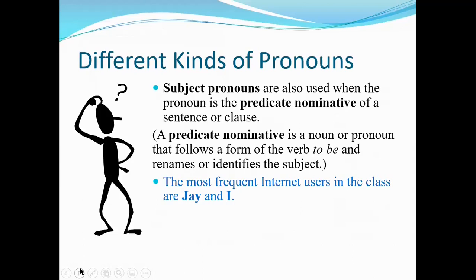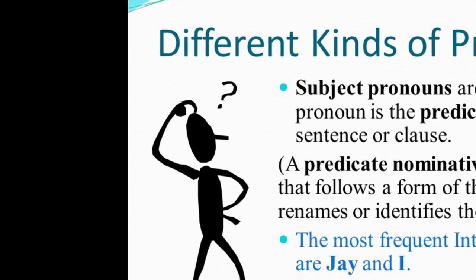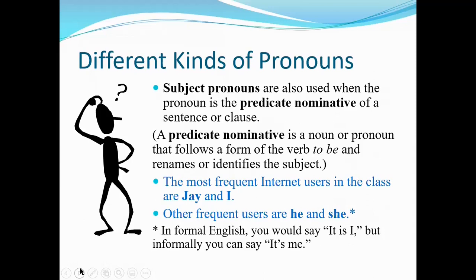In everyday speech you're more likely to say 'the most frequent Internet users in the class are Jay and me,' but formally it's 'Jay and I.' If you're using formal English and you answer the phone, you'd actually say 'It is I.' But we don't do that — we say 'It's me.' Where we do use the predicate nominative correctly is when a telemarketer calls and says 'Is this Angela?' — she would say 'This is she.' 'This' is the subject, 'is' is a form of to be, and 'she' is the predicate.